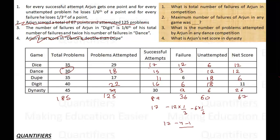Now the questions: The first question — what is the total number of failures of Arjun in the competition? Total failures = 36. The maximum number of failures in any single game = 12 (Dice). What is the number of problems attempted by Arjun in the Task competition? Task attempted = 18. And what is Arjun's net score in Dynasty? It is 26.